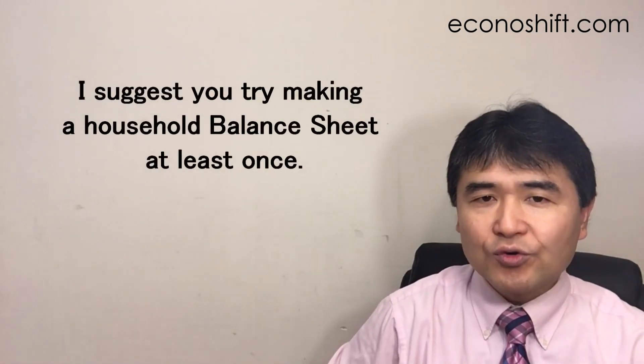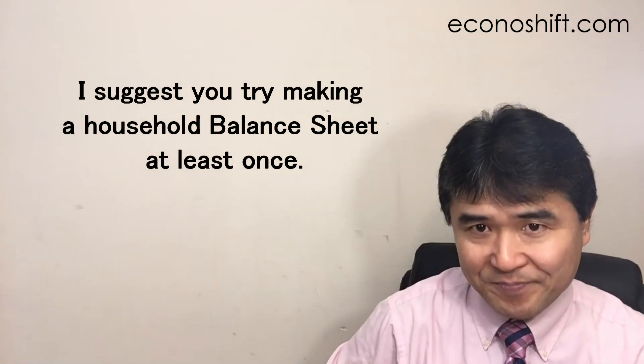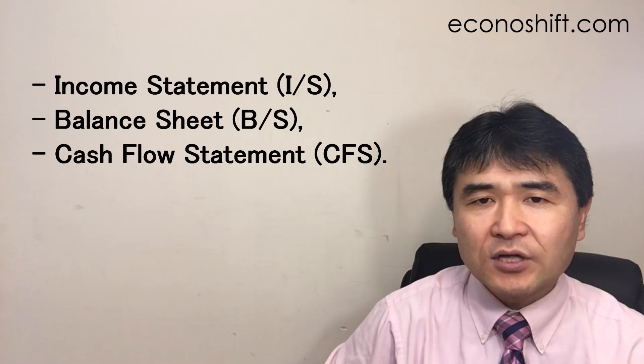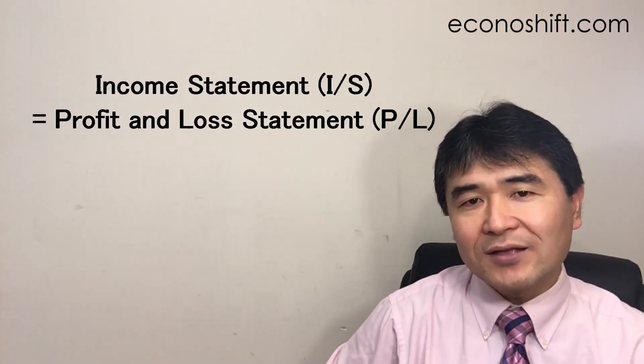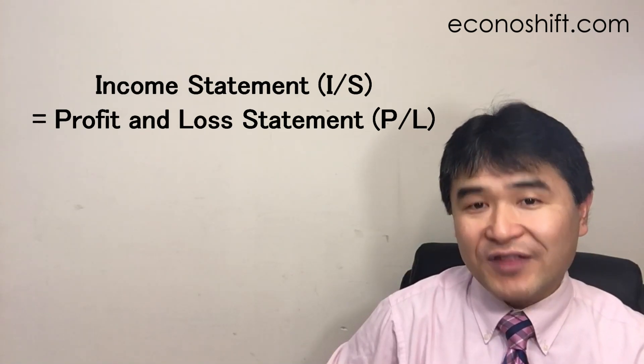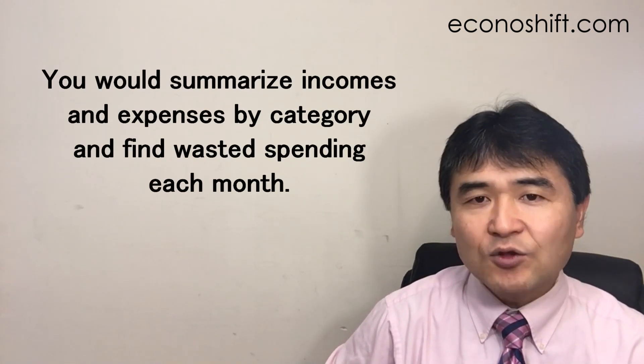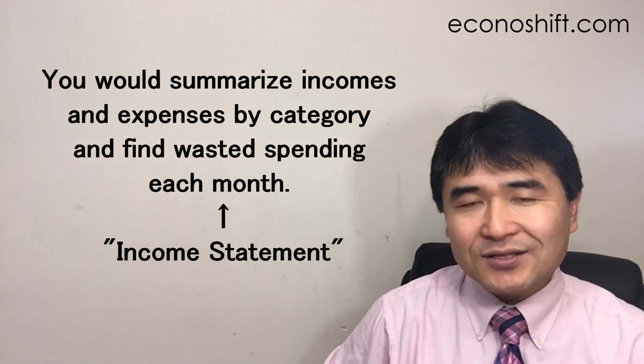So I suggest you try making a household balance sheet at least once. In business, companies always make financial statements such as income statement, balance sheet, and cash flow statement. An income statement and profit and loss statement is the same thing. In household accounts, you do summarize incomes and expenses by category and find wasted spending each month. Actually, that's an income statement.